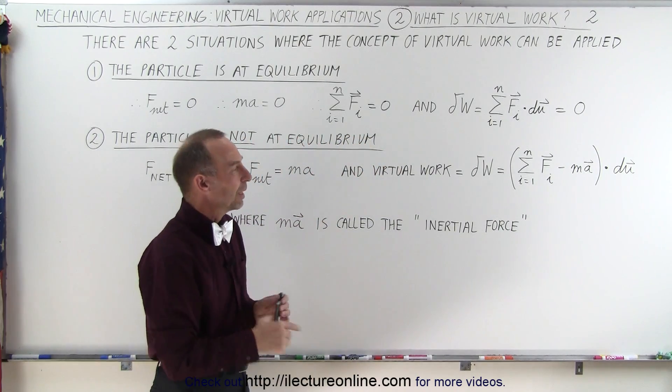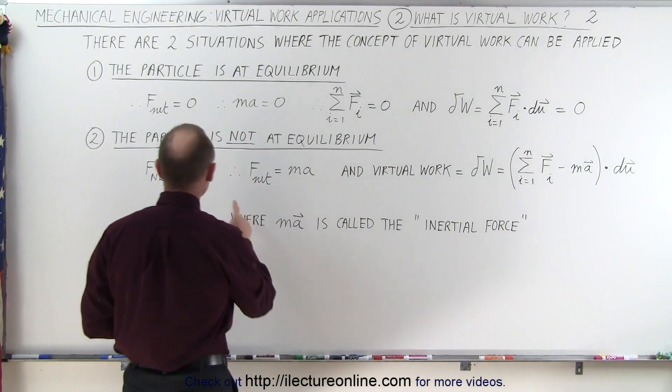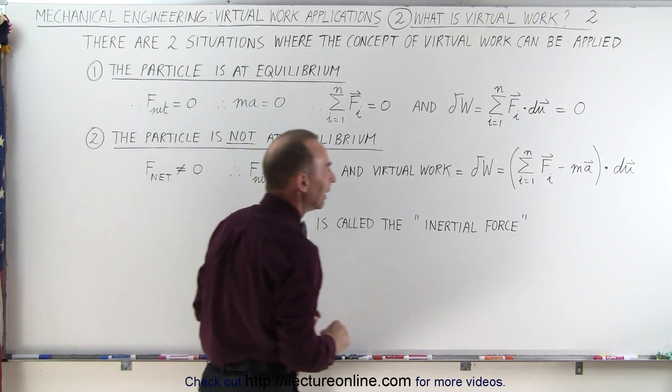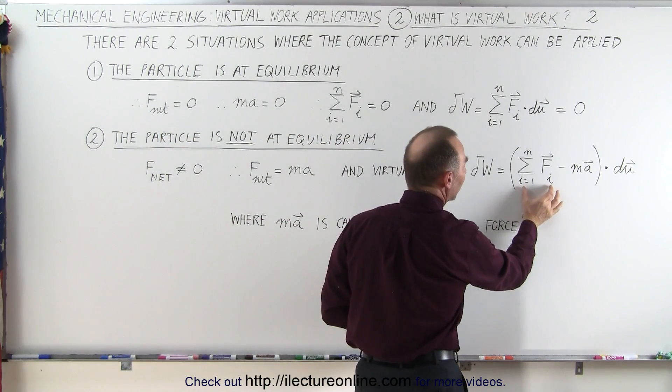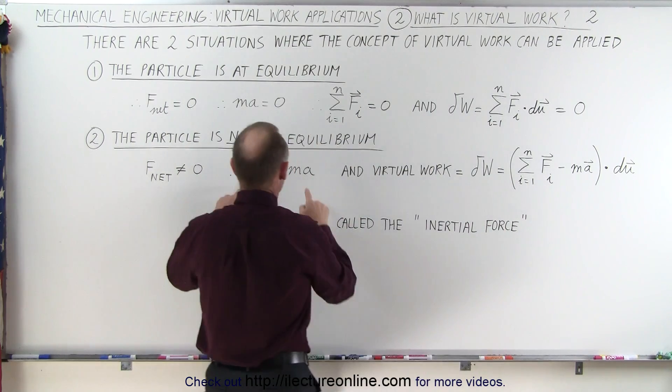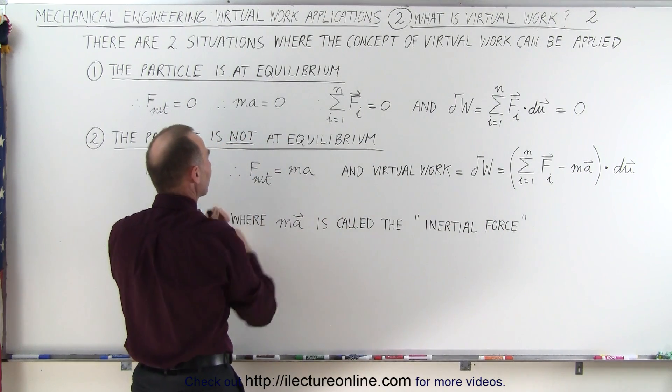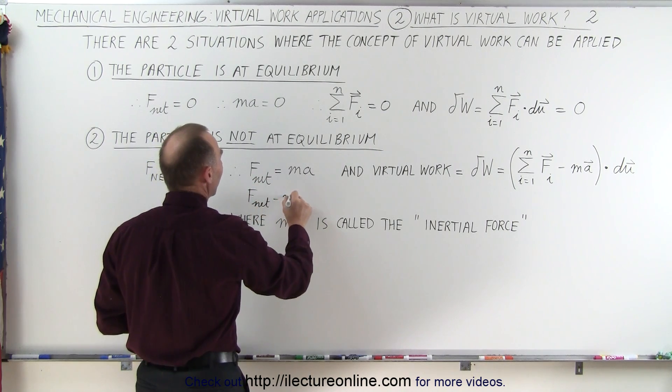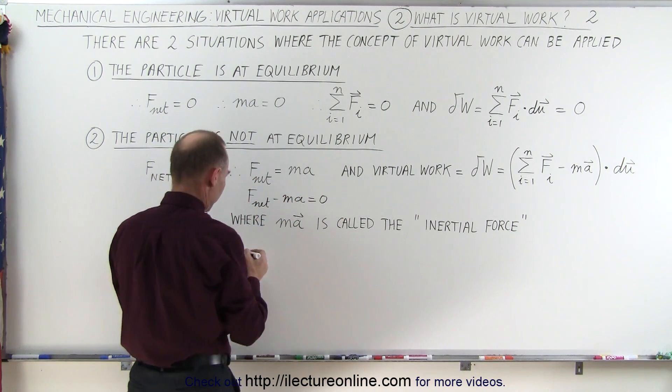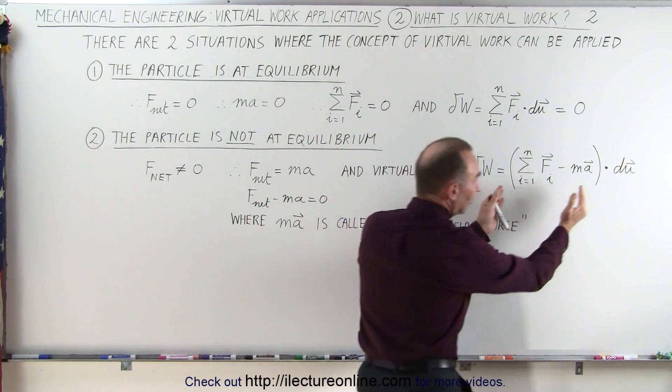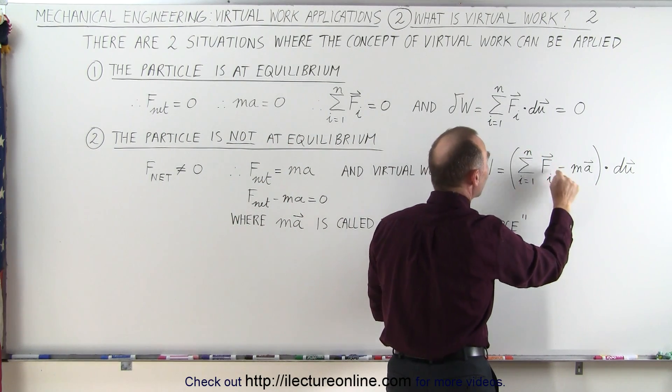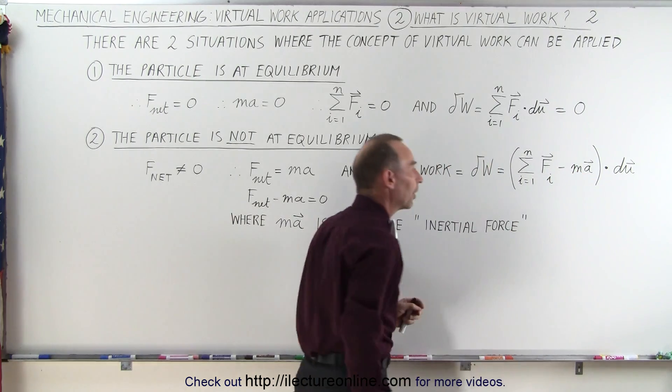Now that makes sense, because if the total net force is equal to m times a, and this of course represents the net force, then of course if I move the ma to the left side of the equation, I end up with F net minus ma is equal to zero. In other words, what's inside the parenthesis here must be equal to zero because this is the net force minus the mass times acceleration of the particle.